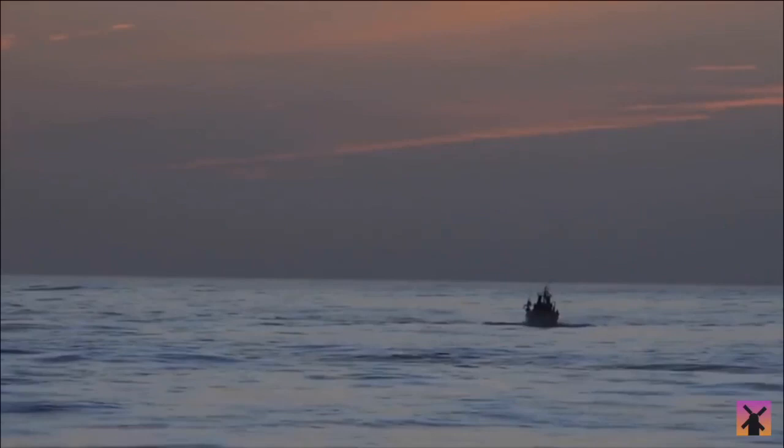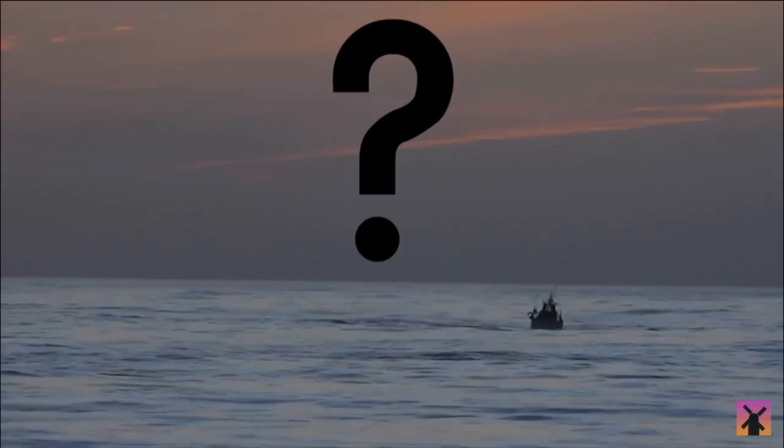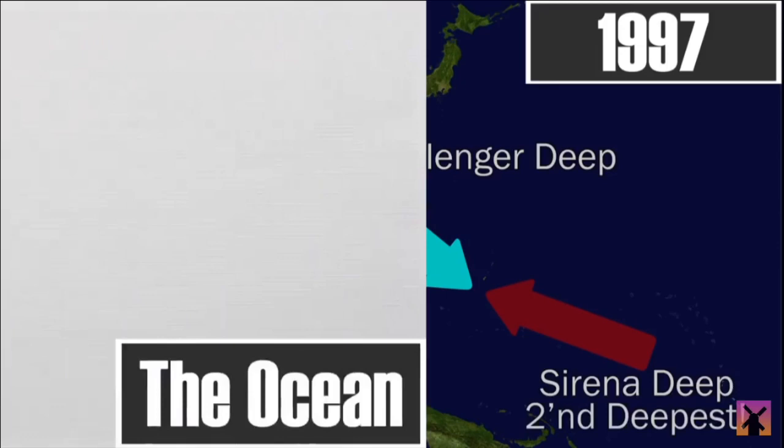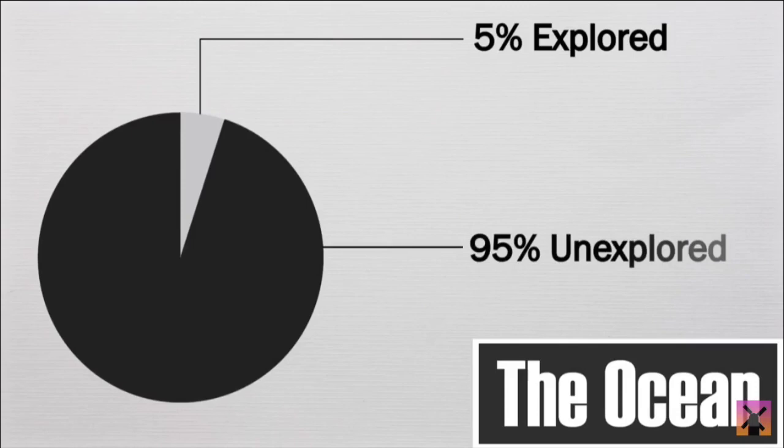It wasn't until 1997, after all, that the Serena Deep was discovered with a depth of 10,732 meters, making it the second deepest known point in the ocean. It is estimated that only about five percent of the ocean's floor has been accurately mapped. Only five percent of the world has been explored. Five percent to be currently a mystery. It may be only a matter of time before an even deeper part of our ocean is found, and who knows what we may discover there.